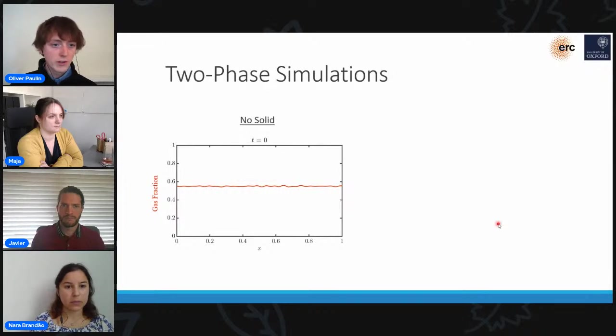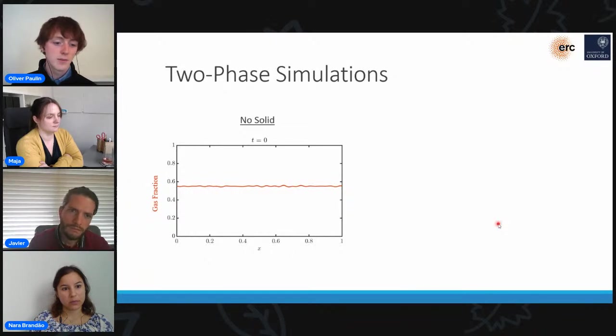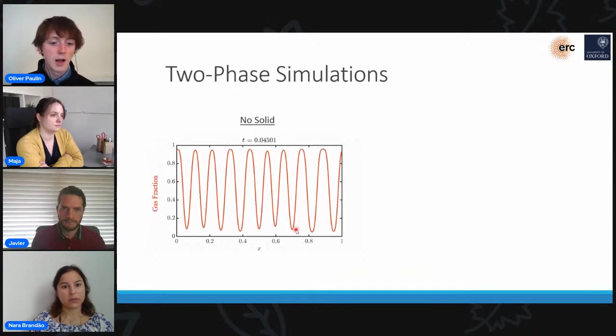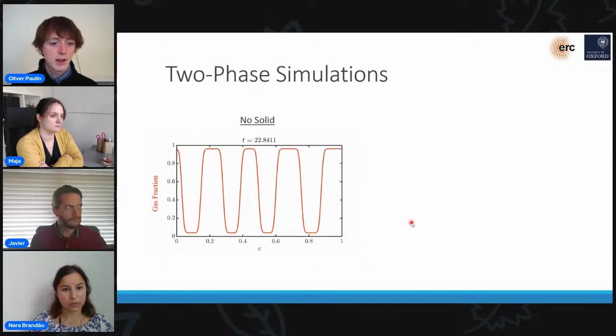Before I dive straight into the full three-phase simulations from our model, I'll start by considering a couple of two-phase simplifications just to help us get a bit of intuition for what's going on here. So to start with, we'll consider the case where there's no solid in the system. So we've just got gas and liquid in an unconstrained domain. We'll start our simulation with an almost homogeneous mixture of gas and liquid. And what we see is that the gas and liquid separate into these distinct gas-rich and liquid-rich domains, which will coarsen over time. This is the behavior we expect to see. It's typically described by a Cahn-Hilliard-type equation. And yeah, it's just phase separation in an unconstrained medium.